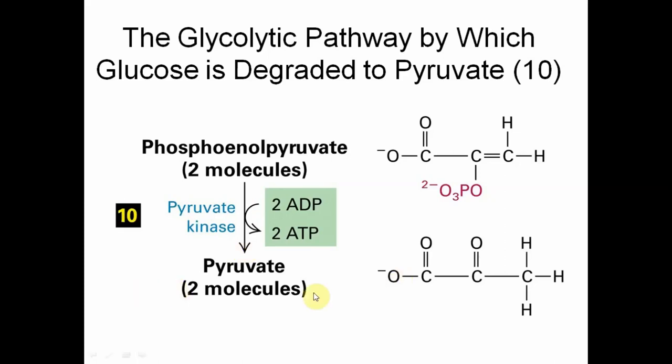Under anaerobic conditions, pyruvate is converted to lactate. The pyruvate is reduced to lactate by the enzyme lactate dehydrogenase. In normal cases, the end product of glycolysis is pyruvate, but in anaerobic conditions this pyruvate will be converted to lactate.